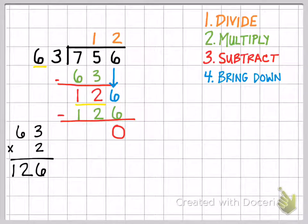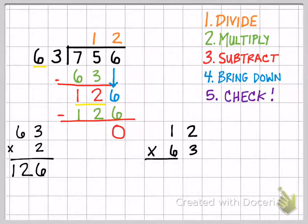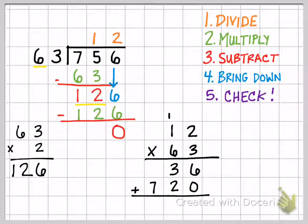Now, the last step in this process is to check your answer, which you learned yesterday. The way that you check this is you take the quotient, or the answer, and multiply it by the divisor. So I'm going to take 63 times 12, and when I do that, I get 756. So I know that my answer is correct.